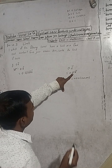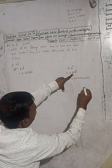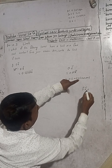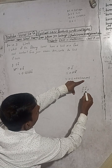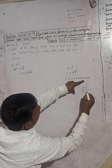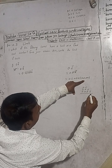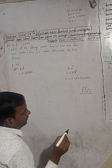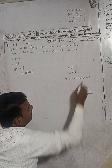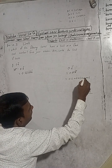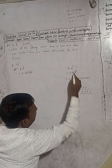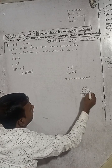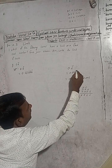So the series is 0.6 + 0.06 + 0.006 + 0.0006 + ... continuing infinitely with each term being one-tenth of the previous.